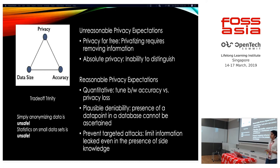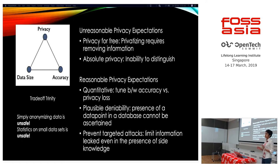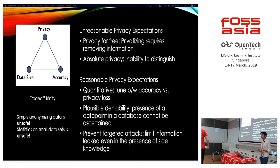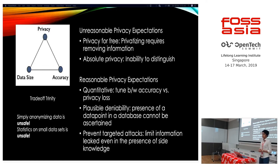Reasonable privacy expectations are that your privacy model should have a tuning that lets you balance between accuracy and privacy loss. It should have plausible deniability — meaning the presence of a data point in the database should not be determinable with certainty. You cannot say a particular person is 100 percent present in the database or not. And you can prevent targeted attacks. These are reasonable privacy expectations.